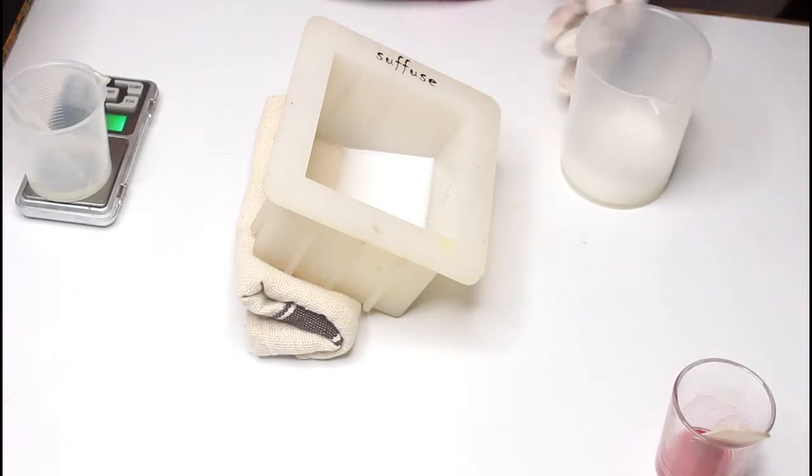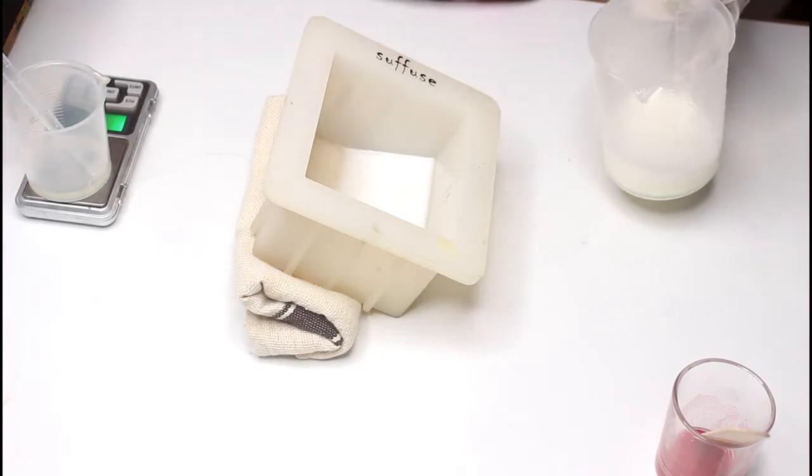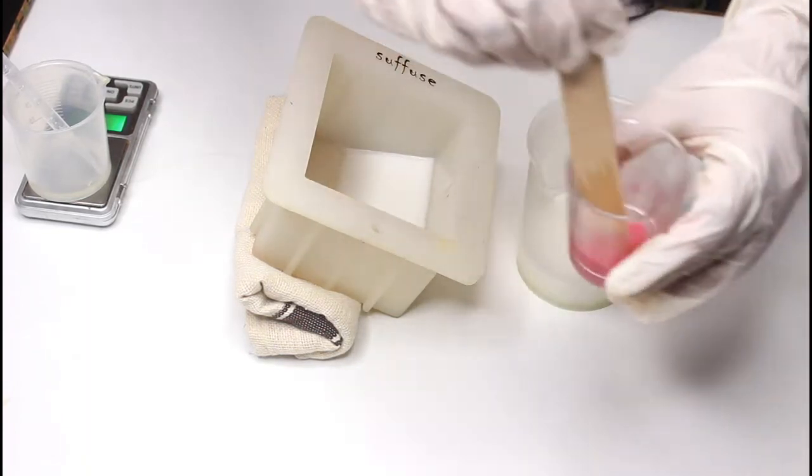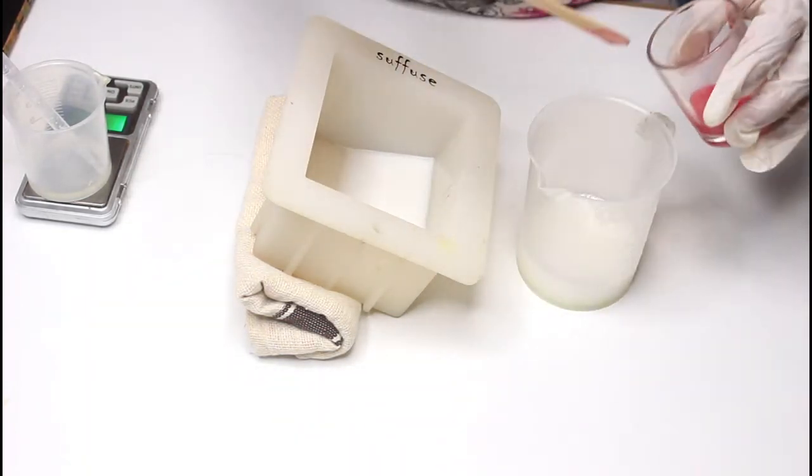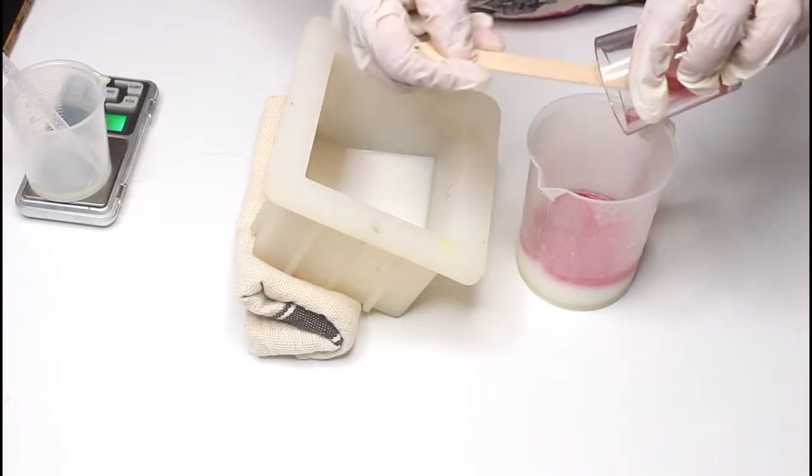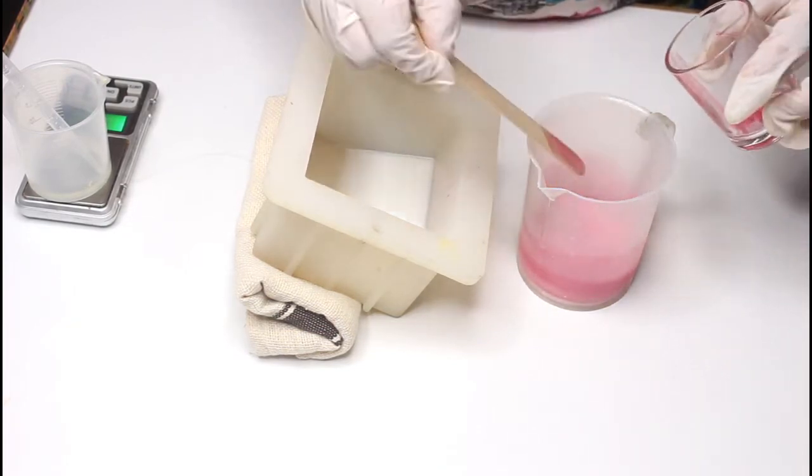Do not ever add mica directly to the base because it will not disperse—it will form clogs. So better you disperse it with either water or rubbing alcohol, whatever suits you, or liquid colorants, and then you add it to the base. Again, same tip here: make sure it is melted but not too hot. You do not want to boil your liquid or anything like that.